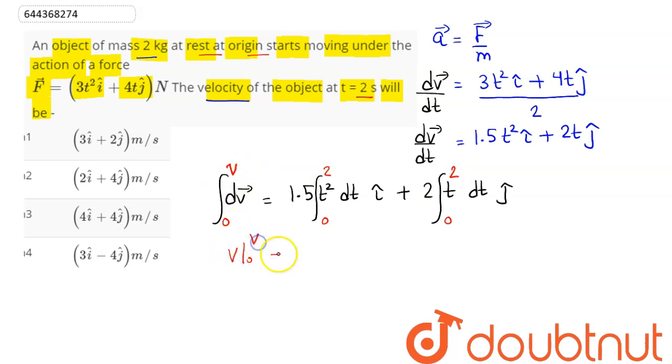So, this is given as 0 to v, and this comes as 1.5 t³/3 with limit 0 to 2 i cap, plus t²/2 with limit 0 to 2 j cap.